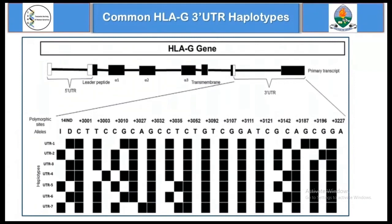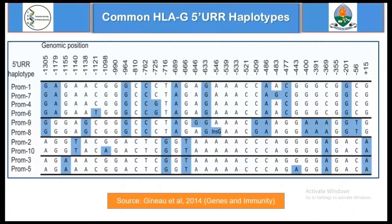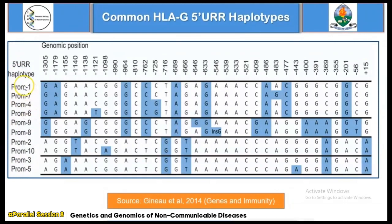This figure shows the common haplotypes of polymorphisms residing in the 3' UTR of HLA-G. The most common ones are seven — UTR1 through UTR7 — and the figure shows the variation sites that differentiate one haplotype from the others. Another figure shows the common haplotypes of polymorphisms in the 5' upstream regulatory region of the HLA-G gene, with ten common haplotypes — PRO1 through PRO10 — and the variation sites that differentiate them.